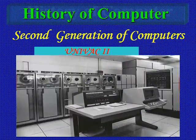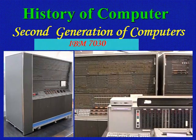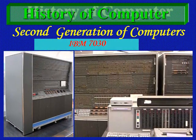The UNIVAC — Universal Automatic Computer II — was developed in the second generation of computers, and you can see its different parts on screen. IBM 7030, also known as International Business Machine 7030, was also developed in the second generation of computers.